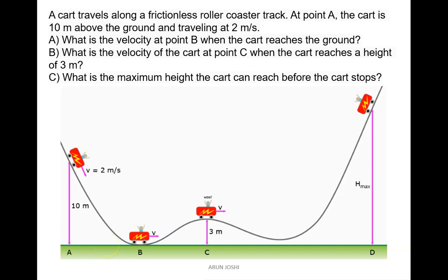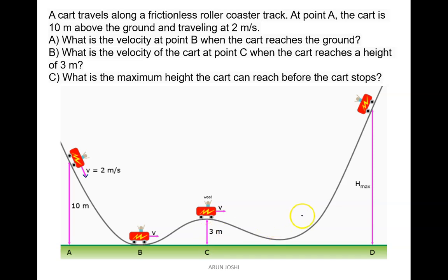Illustration: a cart travels along a frictionless roller coaster track. At point A, the cart is 10 meters above the ground and traveling at 2 meters per second. What is the velocity at point B when the cart reaches the ground? What is the velocity at point C where the cart is at 3 meters? And what is the maximum height the cart can reach before it stops?